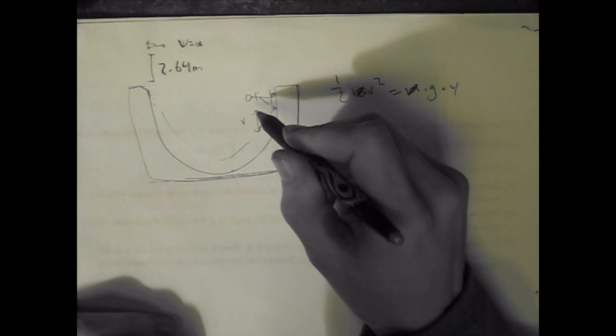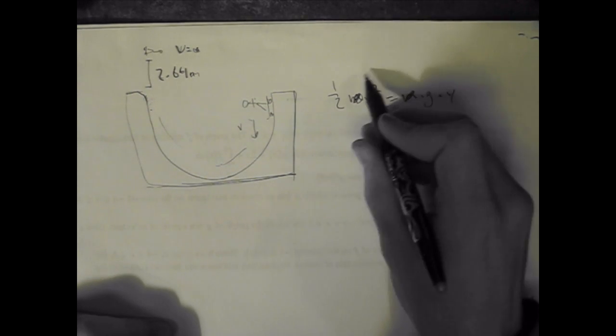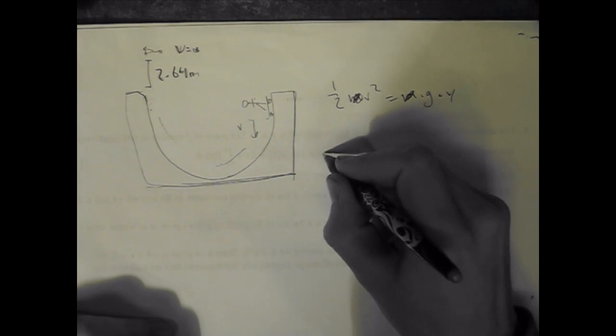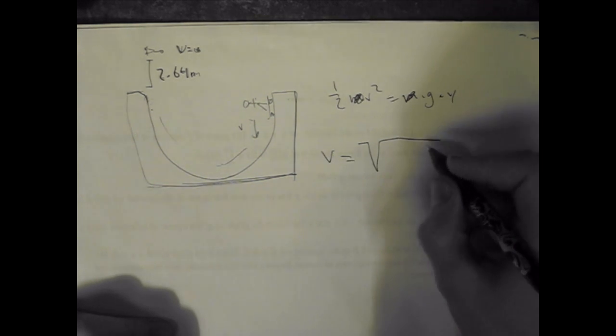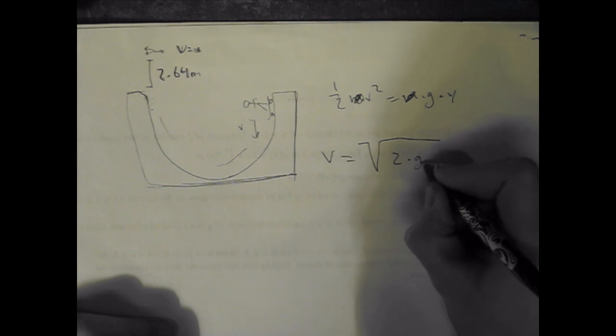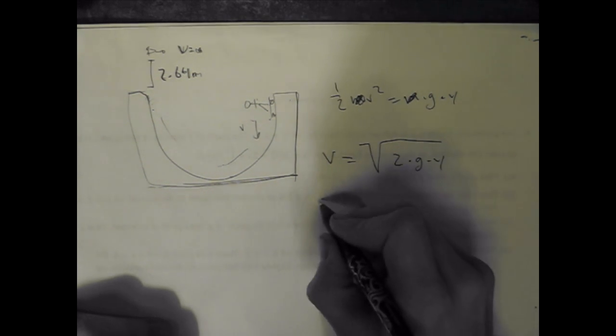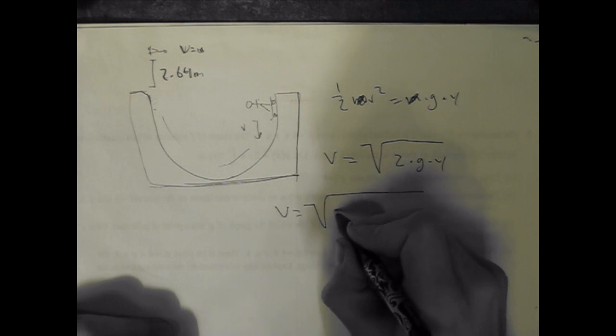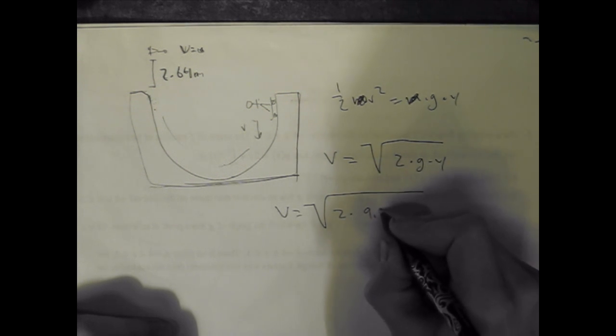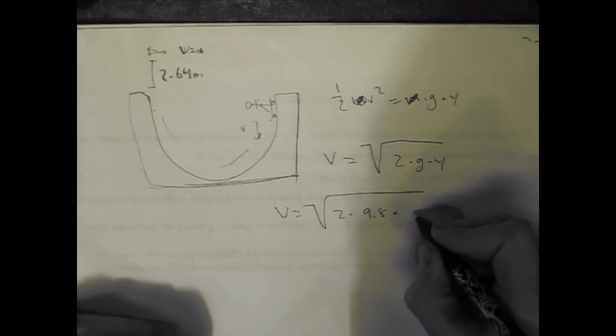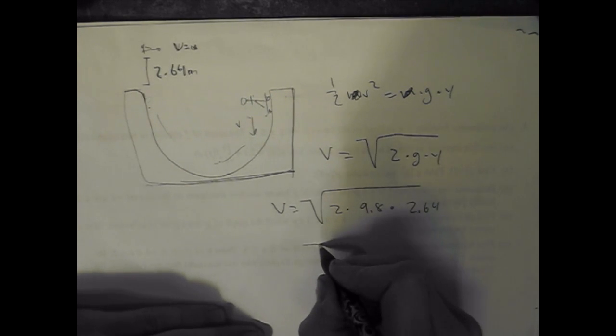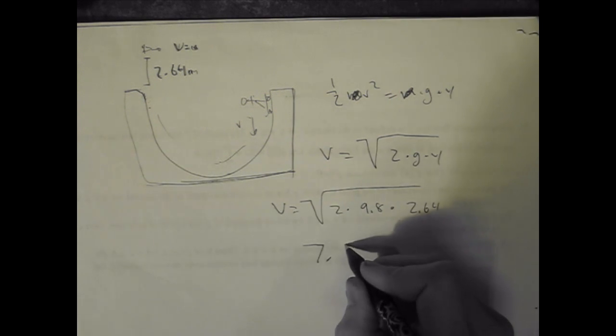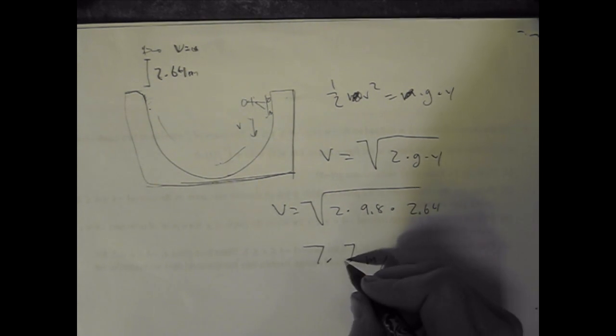We want to figure out what this velocity is, so we can rearrange this equation to say velocity equals—and since velocity is squared—we're going to do square root of 2 times g times y. So velocity equals square root of 2 times 9.8 times 2.64, which is the height. And that just ends up being 7.2 meters per second.